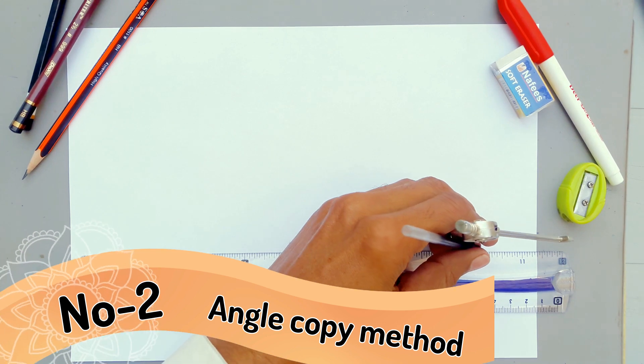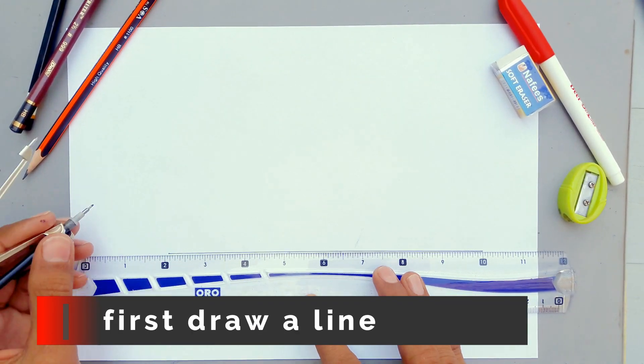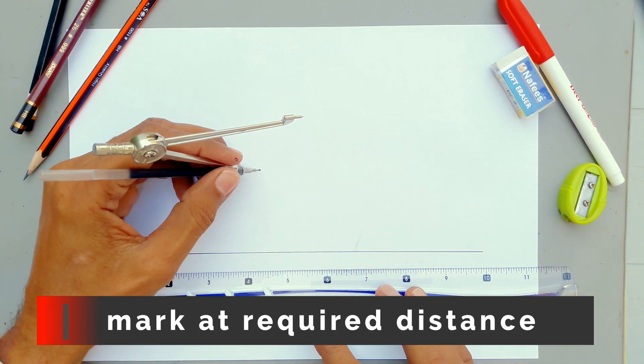Number 2, Angle Copy Method. First draw a line. Mark at required distance.